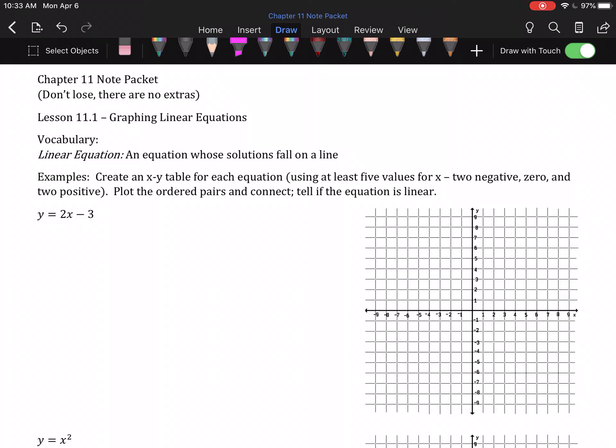In Section 1, we're going to be graphing equations. I know it's called linear equations. Trust me, some of them won't be lines. So, a linear equation is an equation whose solutions fall in a line. When we make an x-y table and plot all the points, we get a straight line. It might be diagonal. That's still straight. It won't be curved. So, we're going to create an x-y table for each equation using at least five values for x. Two negative numbers, zero, and two positive numbers. We will plot the ordered pairs and connect them, and we will then tell if the equation is a line.